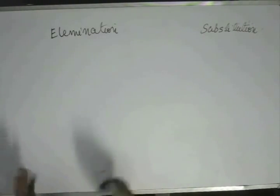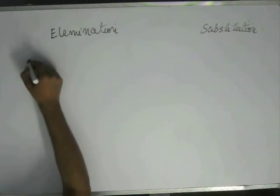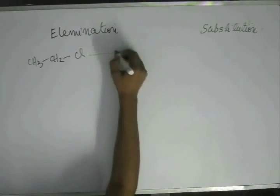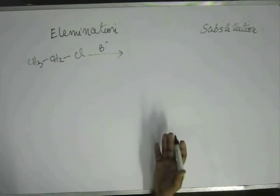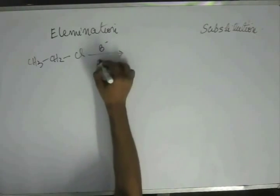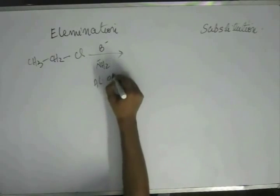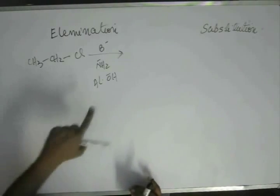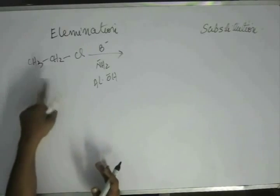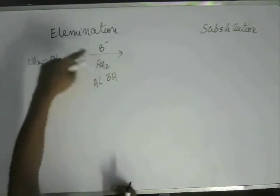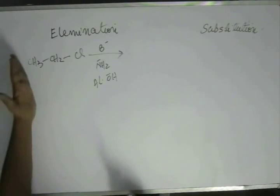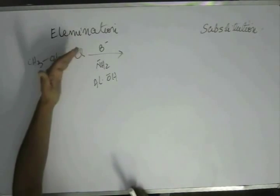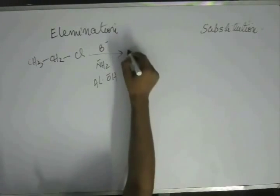Elimination would be carried out by a base. To keep it very simple, let me take a base — that base can be NH₂⁻, like amide, or that base can be alcoholic OH⁻. These two will be common bases we'll use in organic chemistry. If it is a base, then the product will involve abstraction of hydrogen from the beta position, so that the negative charge developing on carbon can be pushed into the anti-bonding orbital, and the leaving group comes out. That results in formation of an alkene.